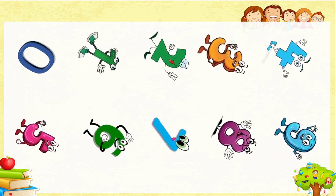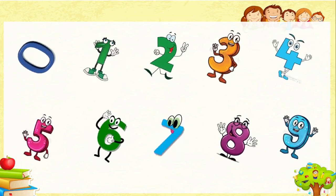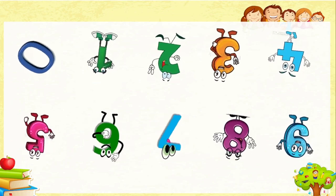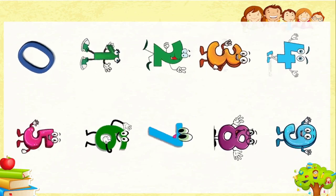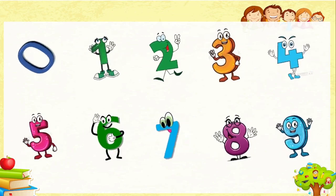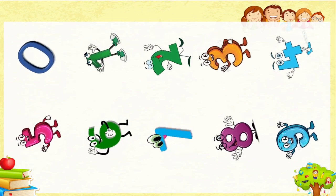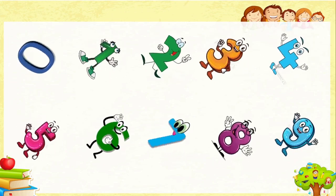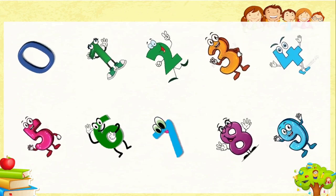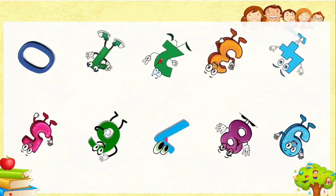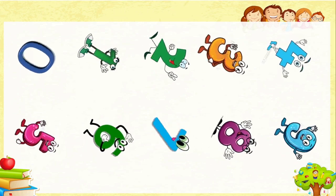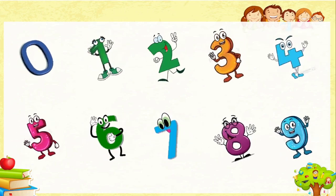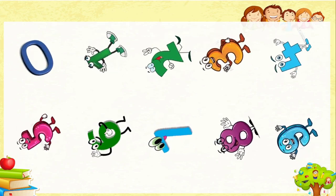Here we start: zero first — means nothing. Then one, two, three, four, five, six, seven, eight, nine. One and one make two; two and one make three; three and one make four — like that it continues. Zero is lesser than all these numbers.